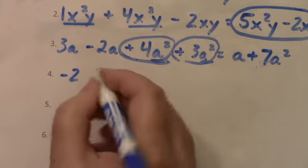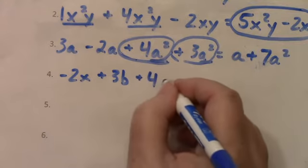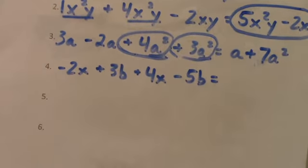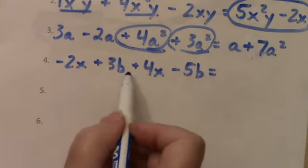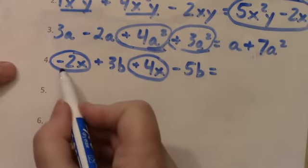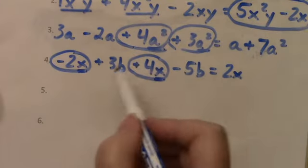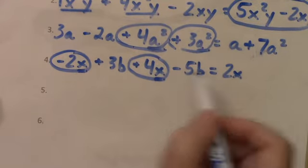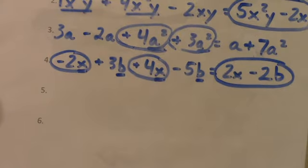Well, negative 2x plus 3b plus 4x minus 5b. Well, even though they're not next to each other, I can do them out of order. This is why I want to keep my sign with my term. Here I have negative 2x adding a 4x. Negative 2 plus 4 is 2 and I keep my x, my x and my x. Then I have a 3b, a positive 3b minusing a 5b. So 3 minus 5 is negative 2. And then my term of b, I just stick with it. So that becomes 2x minus 2b.